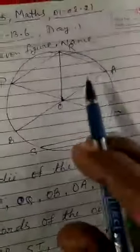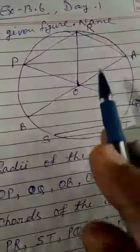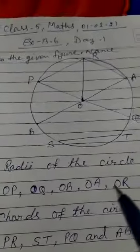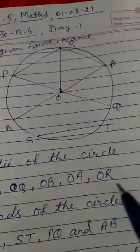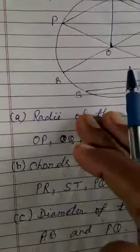We have drawn the figure in the copy also, and the first question is radii of the circle. So children, radii is the plural of radius.